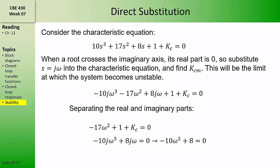From the imaginary part, we find that minus 10 omega squared plus 8 must equal zero, which means omega must equal either zero or plus or minus 0.894. That can then be substituted into the real part of the equation to find that Kc has a limit at minus 1 and at 12.6. At these two values of Kc, the roots of this characteristic equation lie on the imaginary axis, and therefore those two values of Kc represent limits of stability for this process.